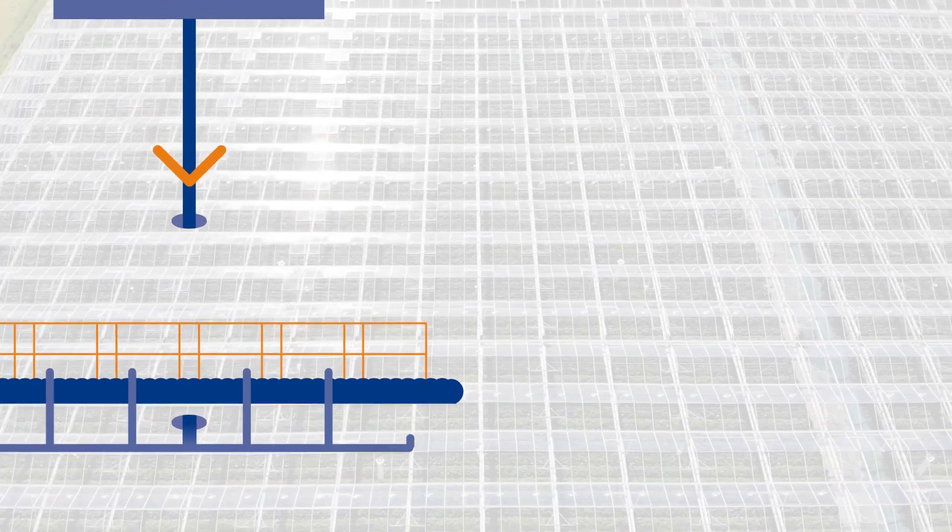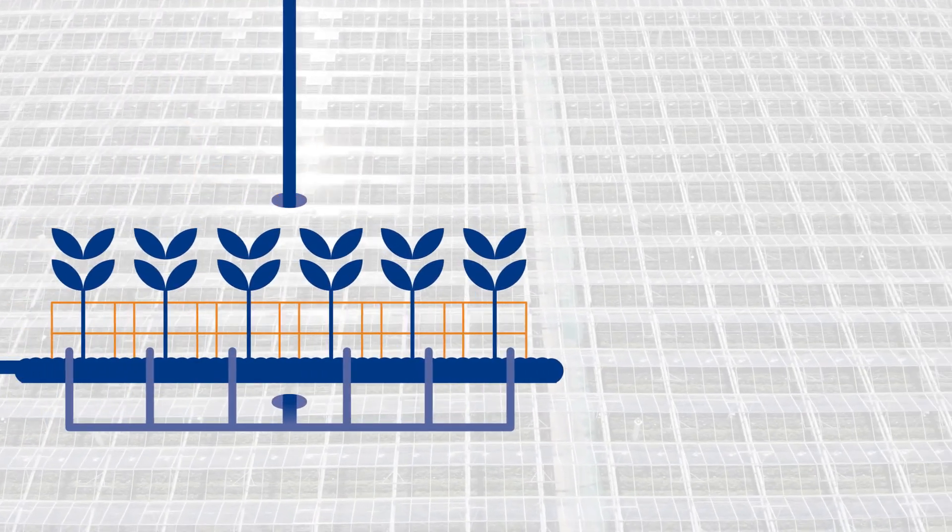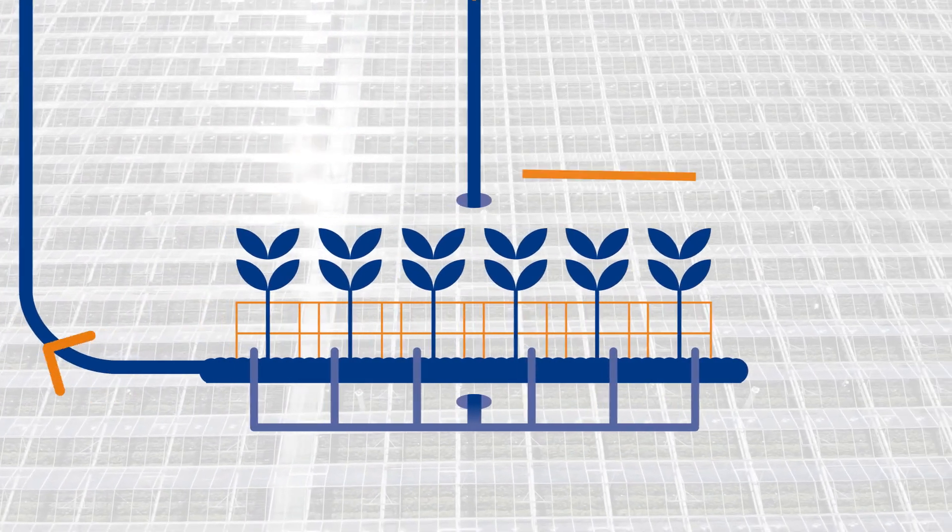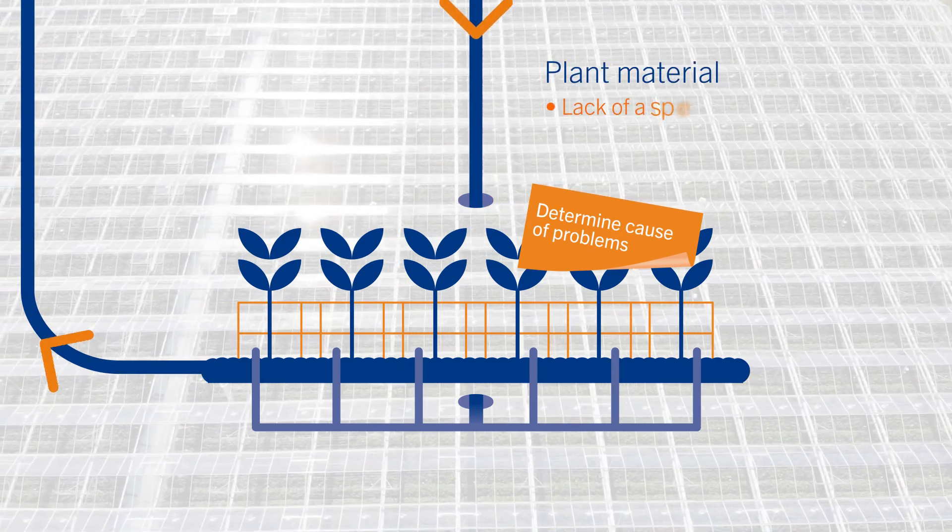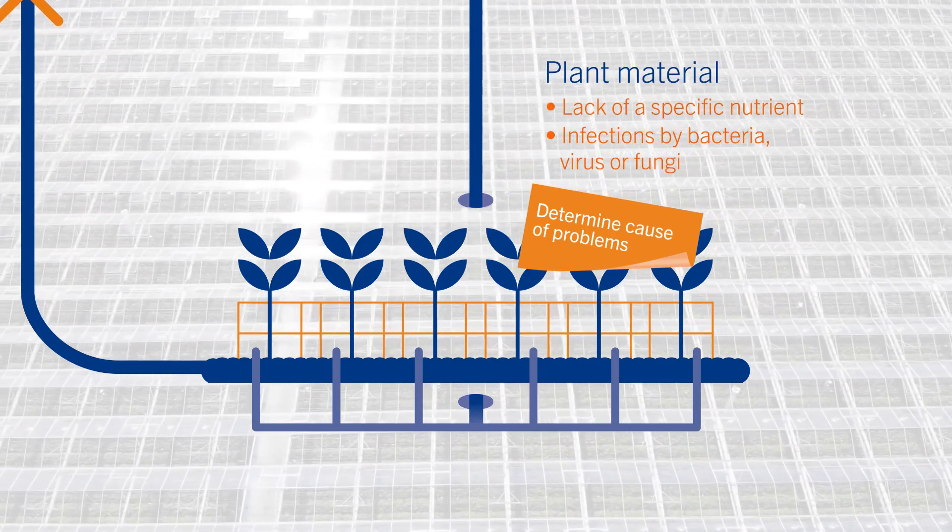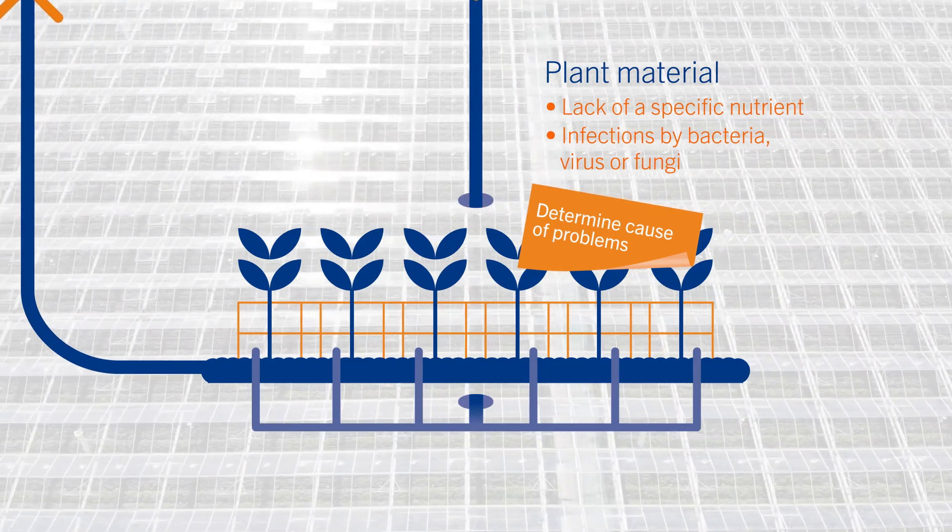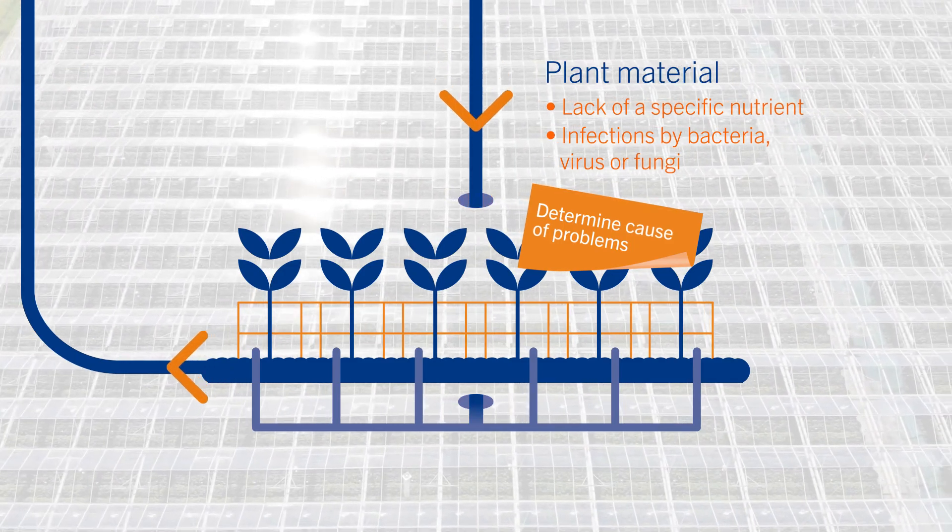Analyzing fertilizers in the A and B tank ensures optimal fertigation. In case of crop damage, we provide professional support to determine the cause of the problem. Lack of a specific nutrient or infections by bacteria, virus or fungi – our plant doctor will find the reason why.